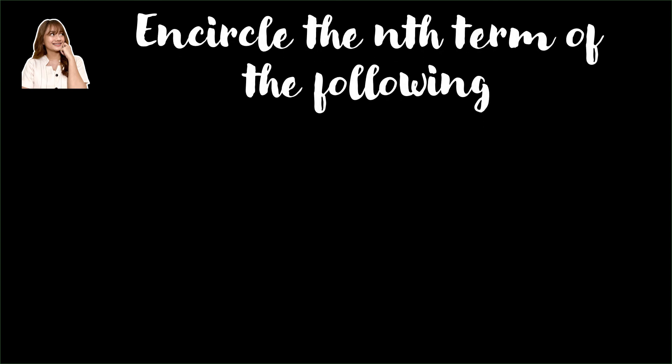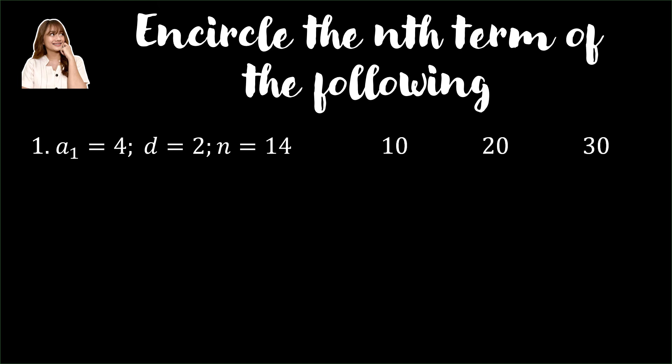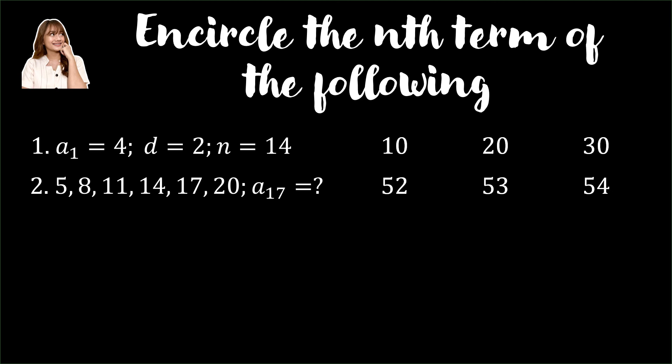Find and circle the nth term of the following. Number 1: a sub 1 is equal to 4, d is equal to 2, n is equal to 14. Among the given numbers, determine the 14th term. Number 2: given the sequence 5, 8, 11, 14, 17, 20, and so on, among these numbers, determine the 17th term.